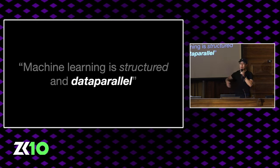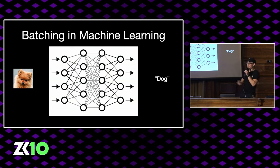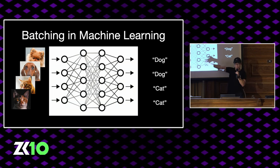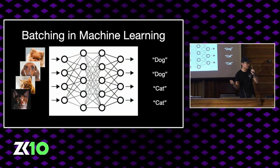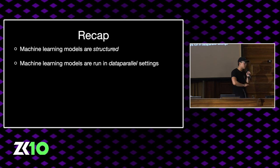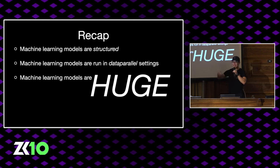Machine learning is also what we call data parallel. Normally you feed one image through your cat-dog classifier, but why stop there? We have GPUs with thousands of cores. We can run tons of examples at the same time through the same circuit — the same model architecture with many, many different inputs. This is the data-parallel setting. And it turns out GKR supports this natively. ML models are structured, data parallel, and also huge — billions of parameters, gigaflops to teraflops — making them very difficult to circuitize. We need something different: GKR.